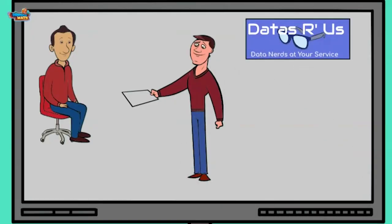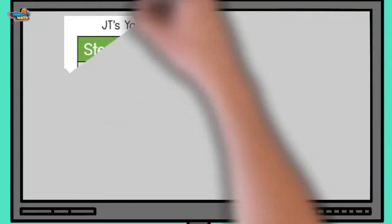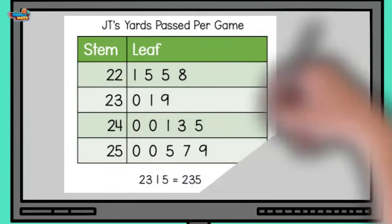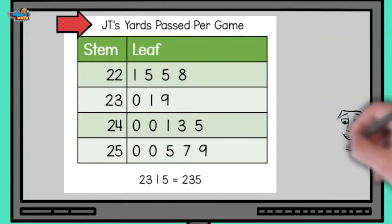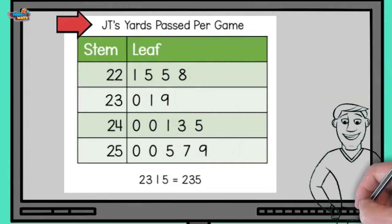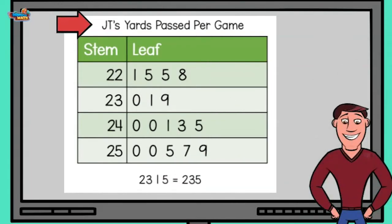But he put it into some tree thing. Let's check this out. Oh, this is a stem and leaf plot. The title says the data represents JT's yards passed per game. Looking at the key, it shows the number 23, a line, and then a 5 equals 235.